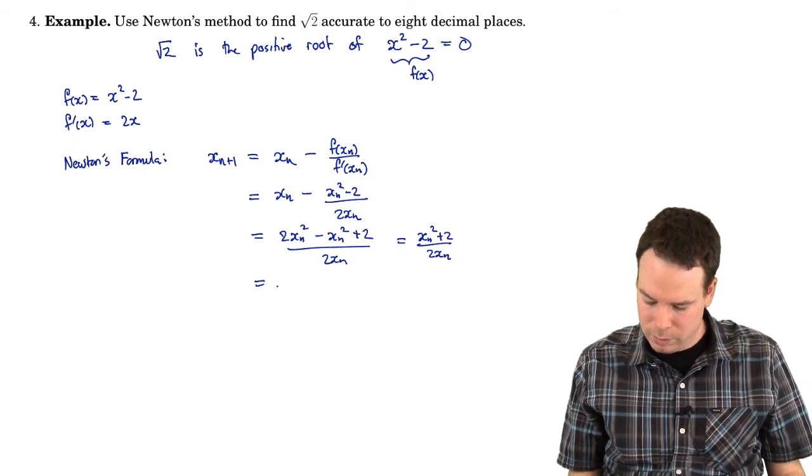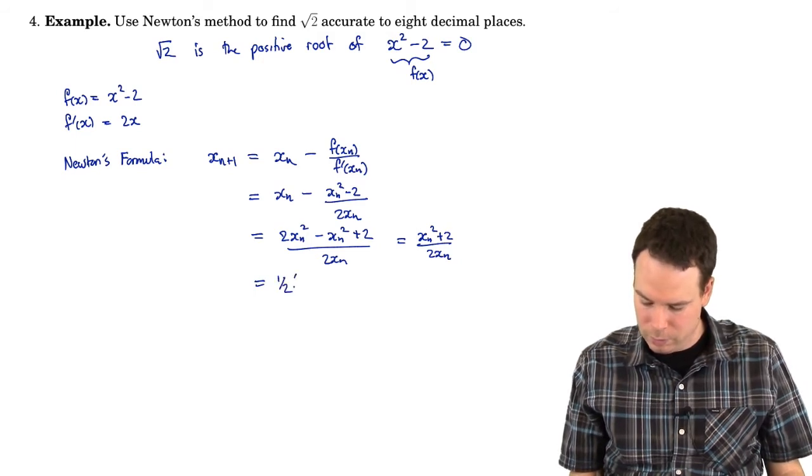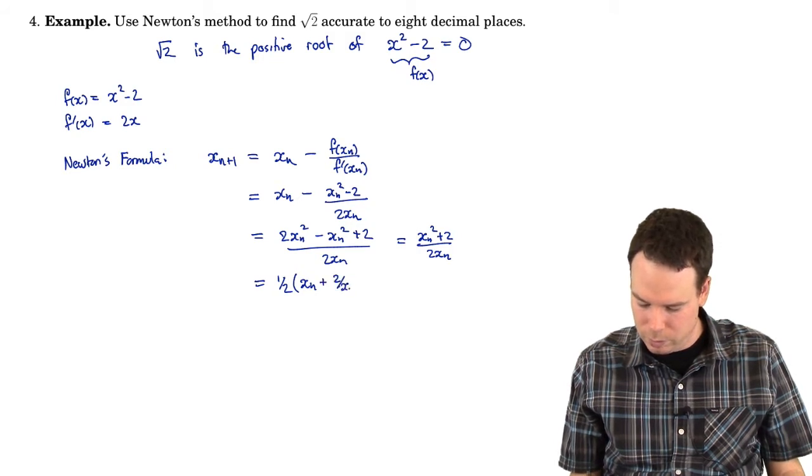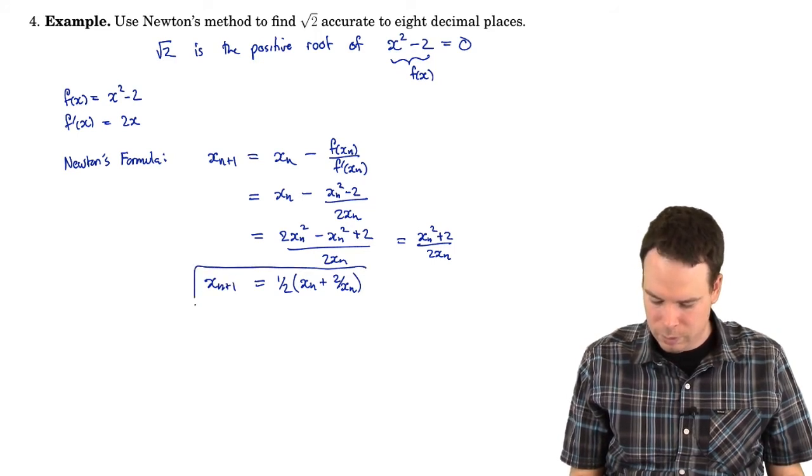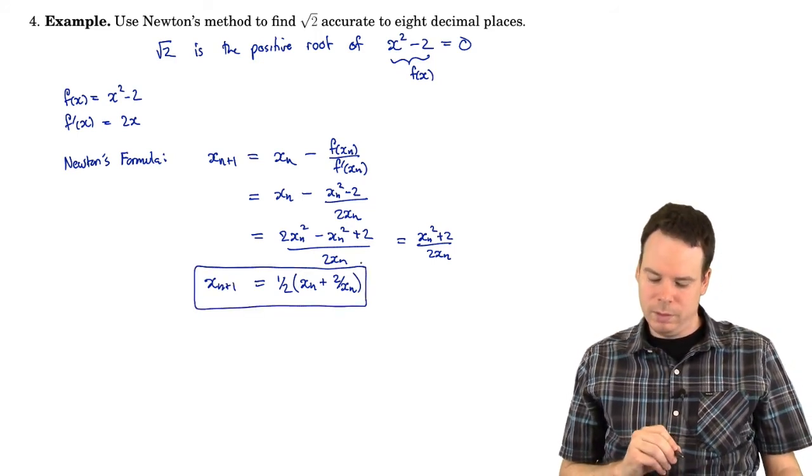x_n squared plus 2 all over 2x_n. So I get x_n squared plus 2 all over 2x_n, which is, I can factor out a half, and I get x_n plus 2 over x_n. And so there is our Newton's iterative formula for this particular example.